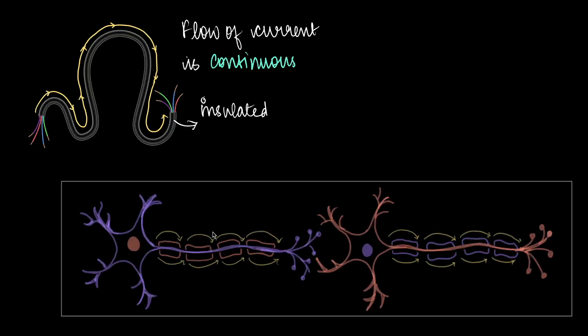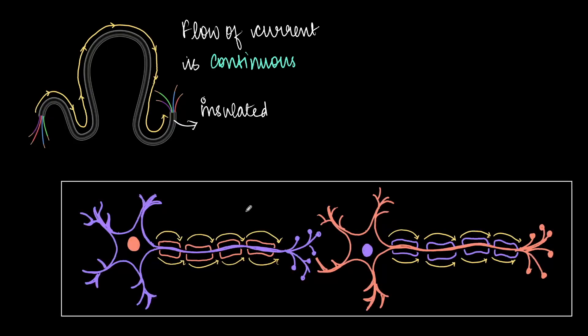But if we were to compare neurons to an electric wire, we know that electric wires are insulated and the flow of current in an electric wire is continuous. But in the case of neurons, it is slightly different. Most neurons are also insulated, but signal does not flow continuously, but rather it leaps ahead faster.